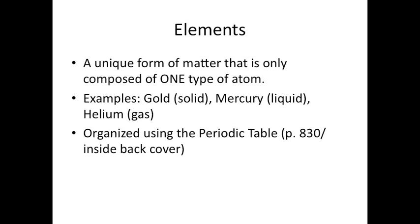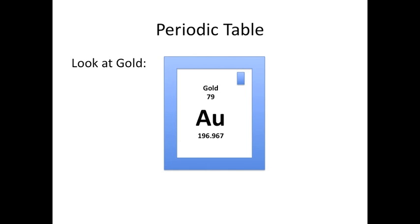All these elements are organized using the periodic table, which you can find on page 830 or on your inside back cover. The periodic table has a wealth of information, but let's just look at one small part of it, the individual boxes, and let's look at one example, gold.